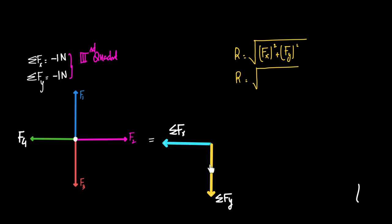How did this system turn into this? Because sigma Fx is negative, this is negative x; sigma Fy is negative, so this is negative y. To put it more precisely, sigma Fx is actually minus 1 i-cap, and sigma Fy is minus 1 j-cap.